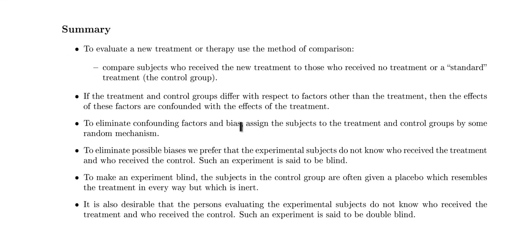In summary: to evaluate a new treatment or therapy, we need to use the method of comparison — compare subjects who received the new treatment to those who received no treatment or a standard treatment (the control group). If treatment and control groups differ with respect to factors other than the treatment, those are confounding factors, and their effects become confounded with the treatment. To eliminate confounding factors and bias, assign subjects to groups by a random mechanism. To eliminate possible biases, we prefer subjects don't know who received the treatment — such an experiment is blind. The control group is often given a placebo that resembles the treatment but is inert. It's also desirable that the people evaluating subjects don't know who received the treatment — such an experiment is double-blind.